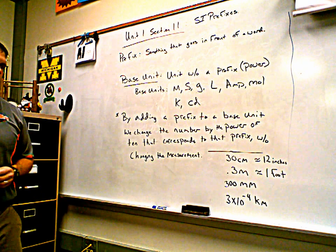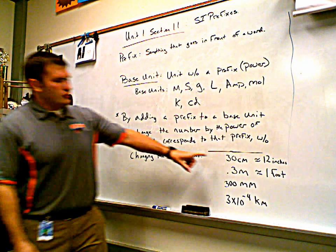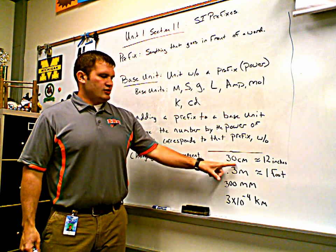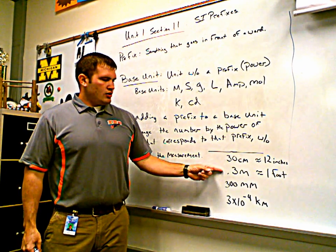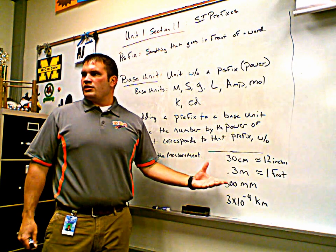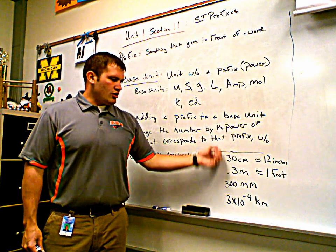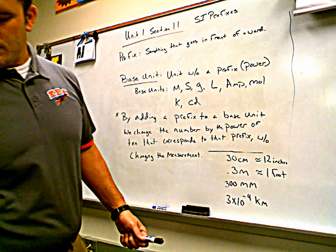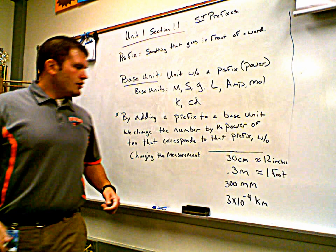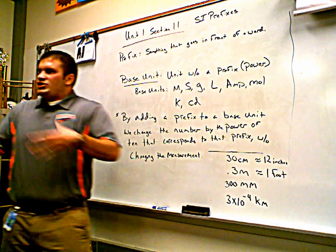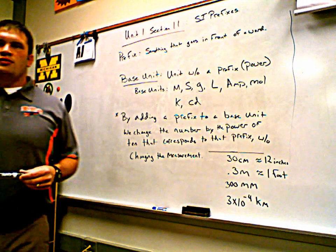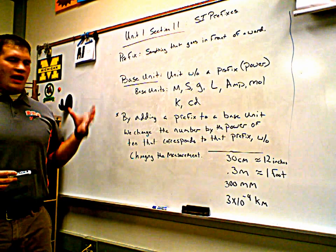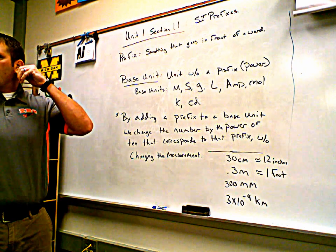If I put this ruler up here and I call it 3 times 10 to the negative 4th kilometers, it doesn't all of a sudden make it smaller than my ruler, right? It's still 30 centimeters. So by changing the prefixes, are we changing the measurements? No. The measurements are staying the same. They do not change. The only thing we're changing when we change the prefix is we're just changing how many zeros we're showing. 30 centimeters has one zero. 0.3 meters, no zeros, right? I'm basically changing the location of my decimal point. That's all I'm doing. But I'm not changing the length of the ruler.